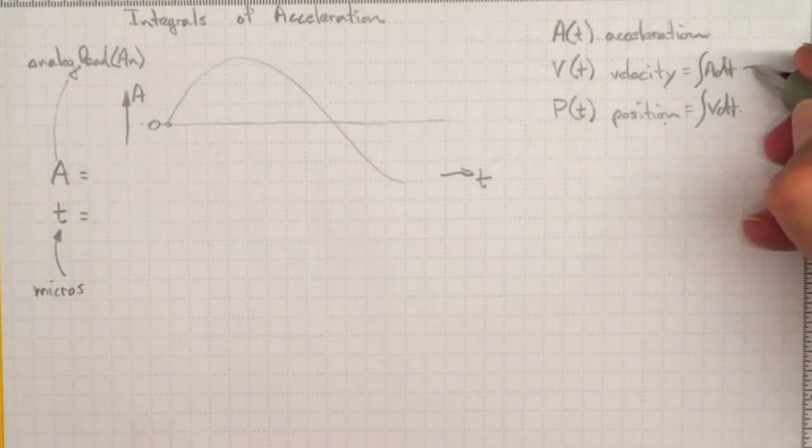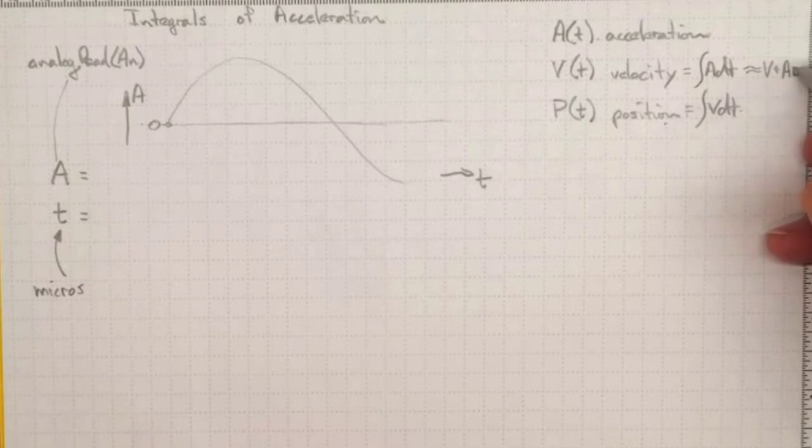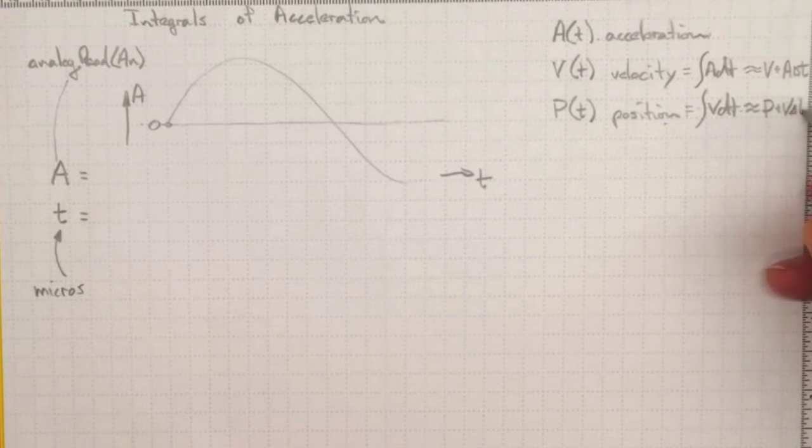So we can estimate the velocity as being whatever the velocity was plus some value of the acceleration times delta t. And we can estimate the position as whatever the position was plus some value of velocity times delta t as we go forward in time.